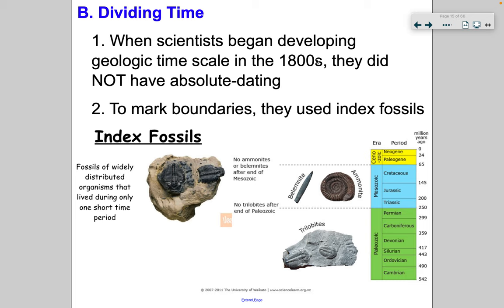Scientists began to develop the geologic timescale in the 1800s. They did not have absolute data, so they had to depend solely on rock layers. To mark boundaries, they used fossils — not just any fossils, but index fossils. Index fossils, by definition, are fossils that were widely distributed but lived only a short period of time. You only find them in that layer and nowhere else. For example, you don't find trilobites after the Paleozoic — so if you find trilobite fossils, you know you were during the Paleozoic time.